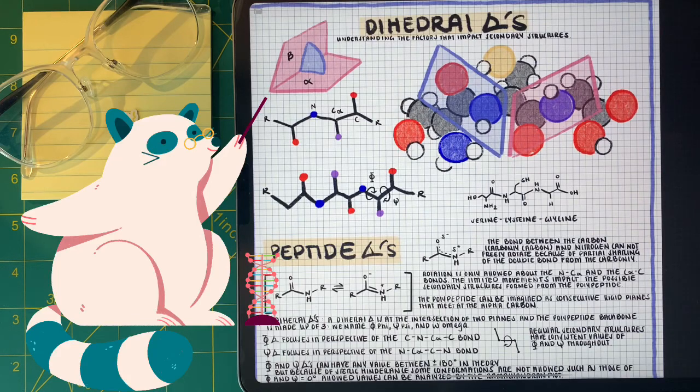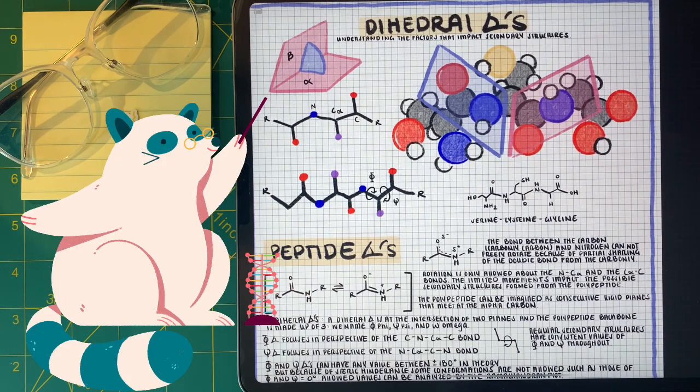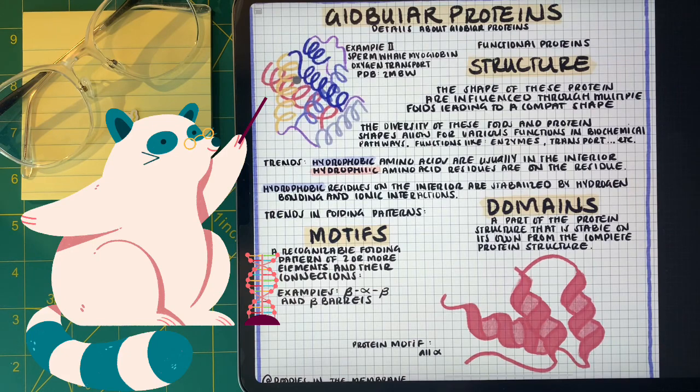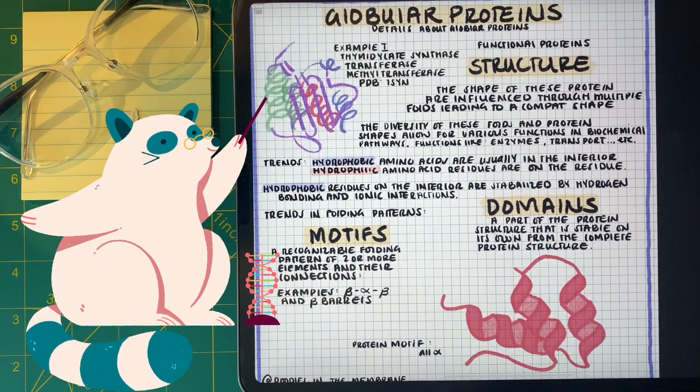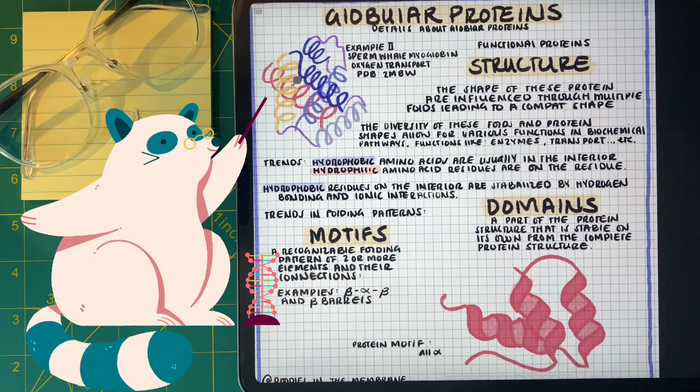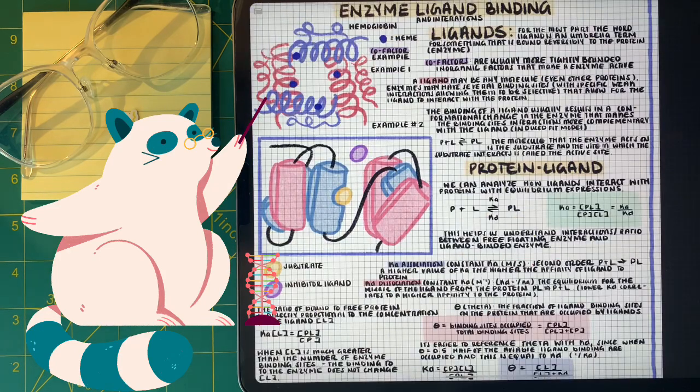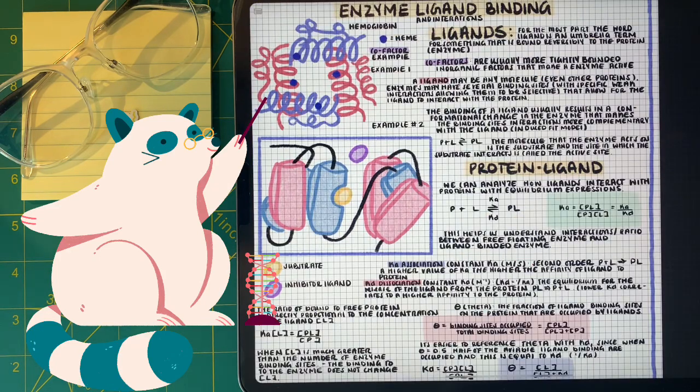Hey guys, how's it going? So I know in the last video we talked about dihedral angles and how that influences secondary structures such as alpha helices and beta sheets, but in this video we're going to start talking about some of the functions and details about proteins and enzymes.